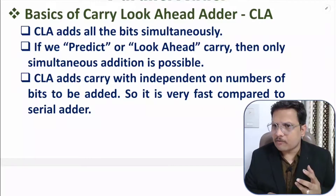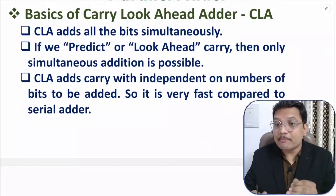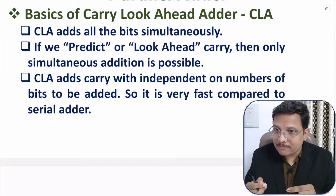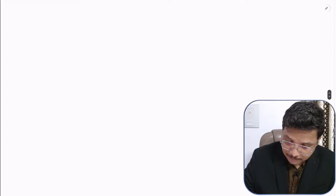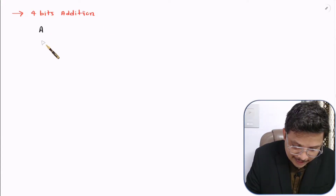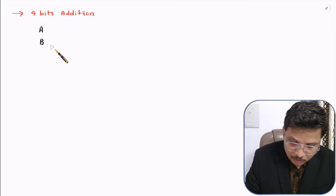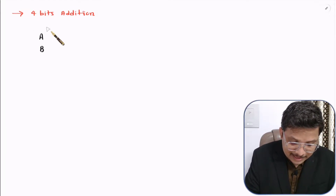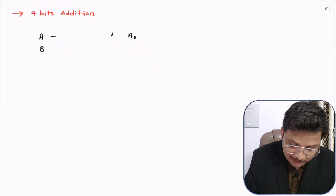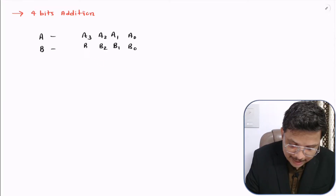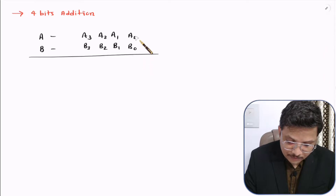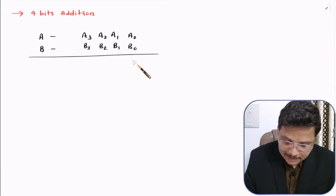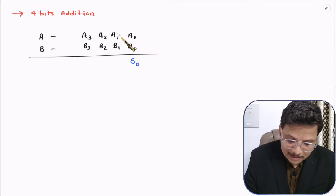Now I'll explain one practical example of addition, and that practical example we will implement in terms of Boolean expressions. Based on those Boolean expressions, I'll make a circuit of CLA. So let us have a simple example of addition. I'll be taking two numbers of size four bits — let us say A and B. A has four bits: A0, A1, A2, and A3. And B has: B0, B1, B2, and B3. When we add these two numbers, first we add A0 and B0, resulting in sum S0 and carry C0.